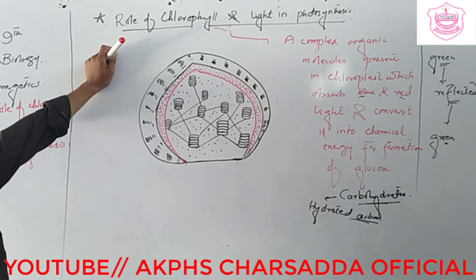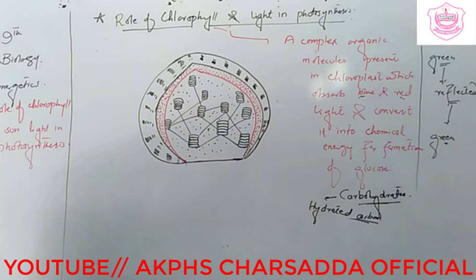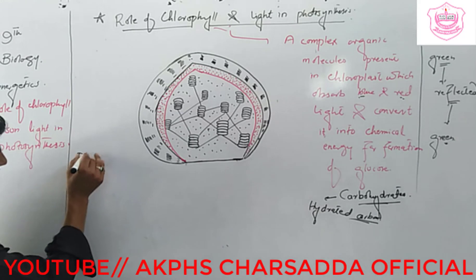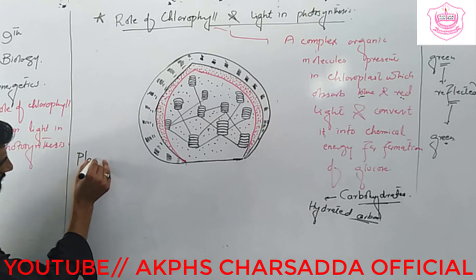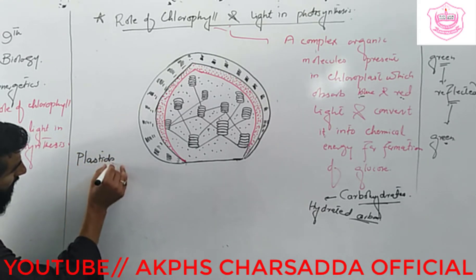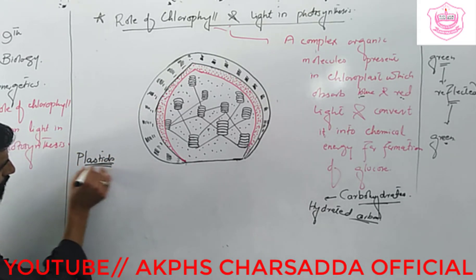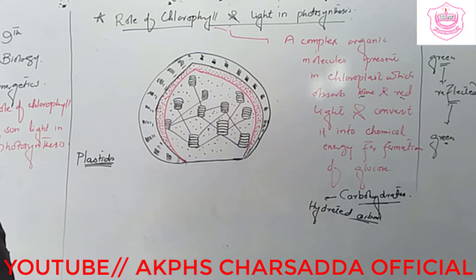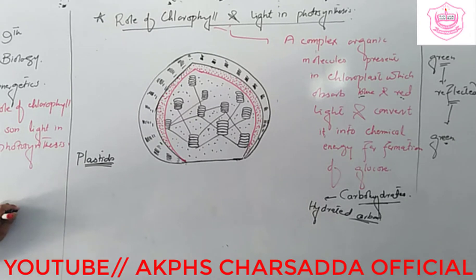There are three types of plastids. What is a plastid? It is actually a cytoplasmic organelle which absorbs sunlight and gives color to the plant. It is known as a plastid, and it is present only in autotrophic organisms.